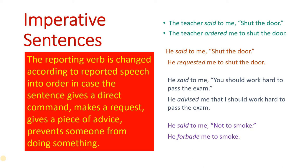In imperative sentences, sometimes there is a confusion whether what was said was a command or a request. For example, 'Close the door.' If you want to show that it is an order, you use the word 'order' — so: he ordered him to close the door. But if you want to show it is a request, you write: he requested him to close the door. Imperative sentences are such that if you want to show the intention, you have to use the verb that will show what the intention was in the action.